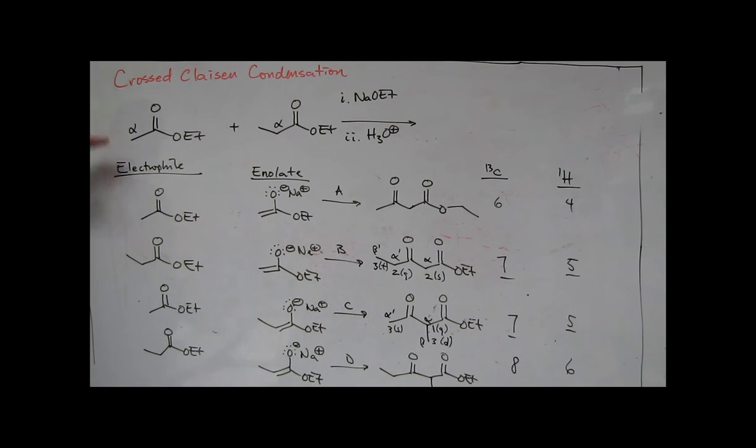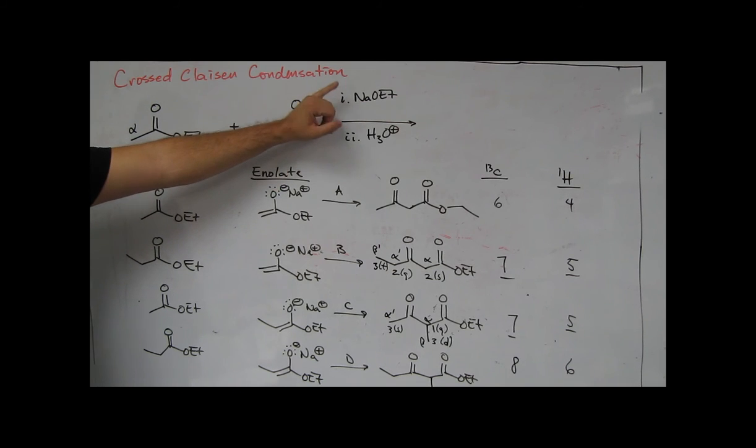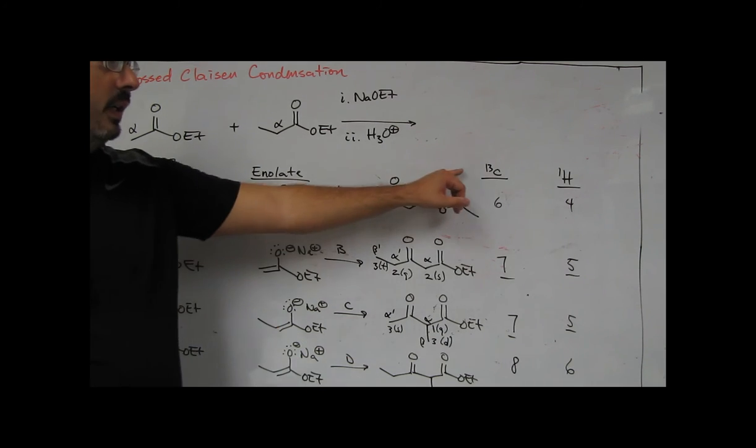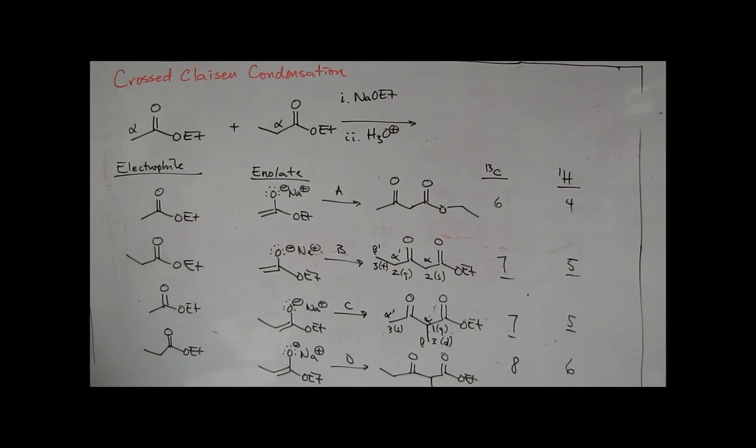So that's been a review of the crossed Claisen condensation. When you have two different types of esters treating under the Claisen conditions, we've identified the electrophiles, the enolates, the products, and how we can differentiate them through C13 and proton NMR.